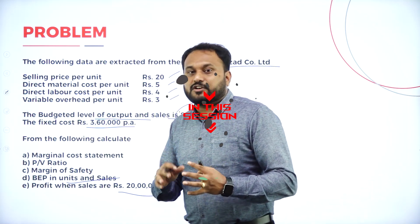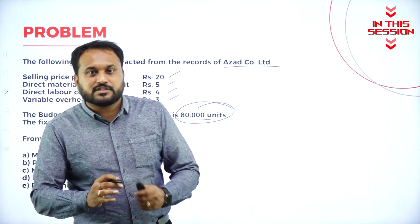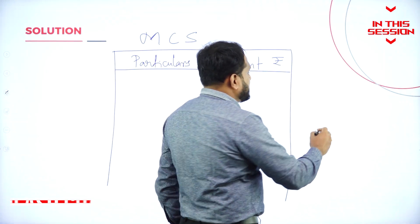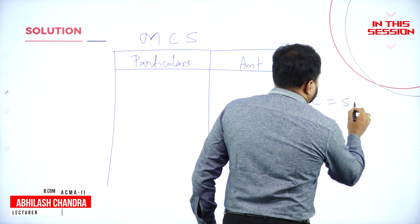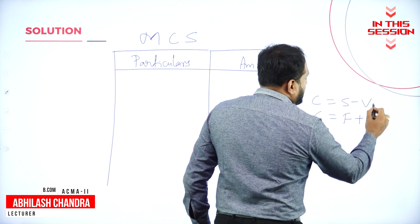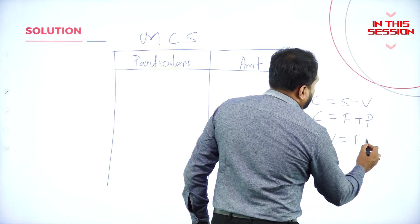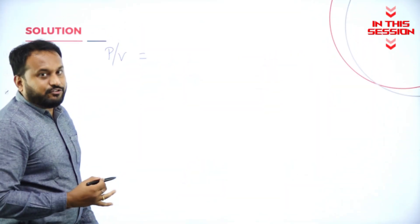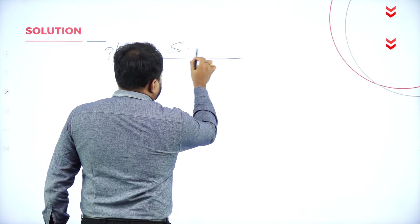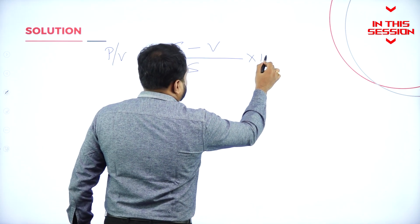Never go with any kind of intention of overconfidence — always go with real confidence. What you are supposed to do is very simple. Always remember there is this formula: C = S − V, and C = F + P, so S − V = F + P. To find PV: PV = (Selling Price per unit − Variable Cost per unit) / Selling Price per unit × 100.